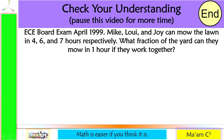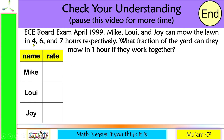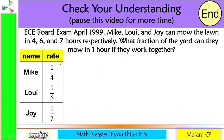This problem is from the ECE Board Exam of April 1999. Mike, Louie, and Joy can mow the lawn in 4, 6, and 7 hours respectively. What fraction of the yard can they mow in 1 hour if they work together? Let's set up a table: Mike's rate is 1 over 4, Louie's rate is 1 over 6, and Joy's rate is 1 over 7. Working together means we add their rates.